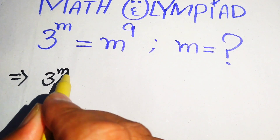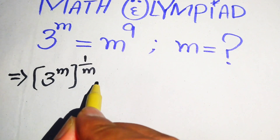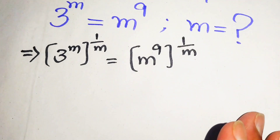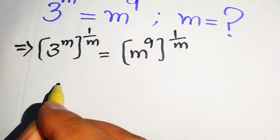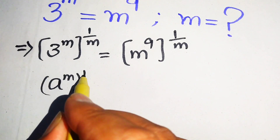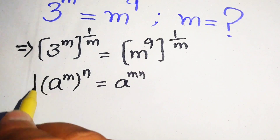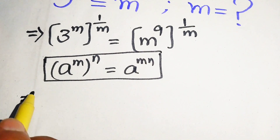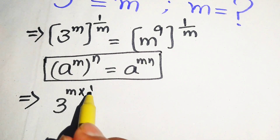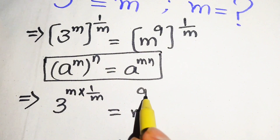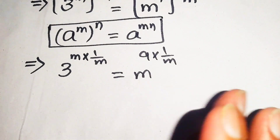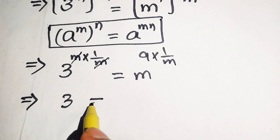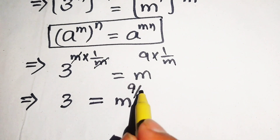We take the mth root, writing it as (3^m)^(1/m) = (m^9)^(1/m). We then use the exponential law: (a^m)^n = a^(m×n). Applying this to both sides, m cancels on the left giving us 3, and on the right we get m to the power of 9 over m.